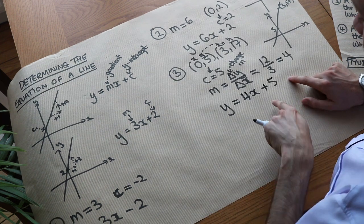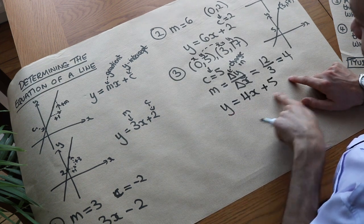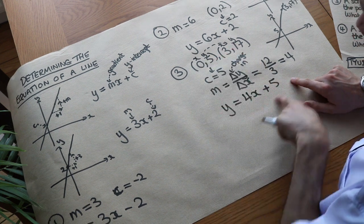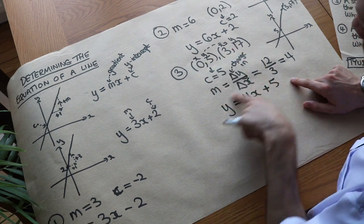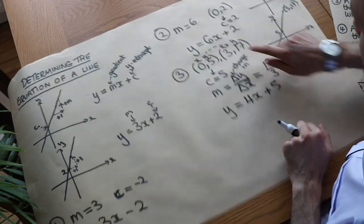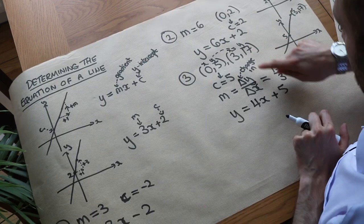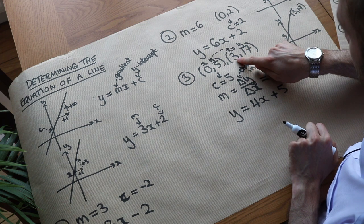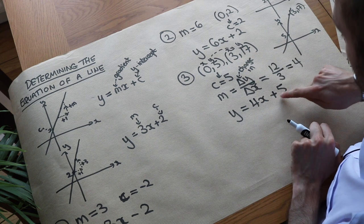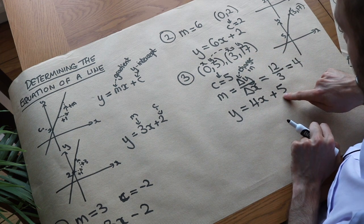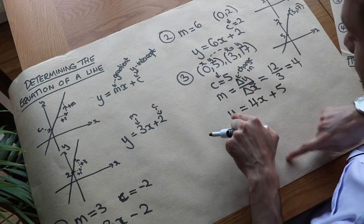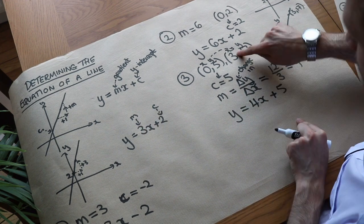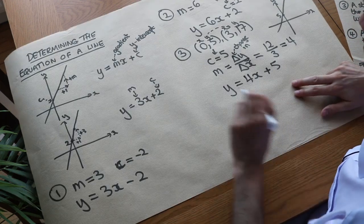If we want, we can always check that this equation is satisfied by the points. Remember this equation is like a membership rule which says whether a point is allowed to belong on the line. Taking the point 3, 17: 4 times 3 is 12, and 12 plus 5 is 17. The y value is 17, so 17 equals 17 — that's true. So that point belongs on this line.